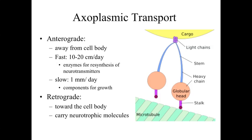This is the concept of axoplasmic transport. The microtubules within the cytoskeleton are organized like railroad tracks, running from the cell body — say, in the spinal cord at belly level — all the way down to the muscles of the toes. Protein motors crawl along these microtubules, either out towards the periphery in what is called anterograde transport, moving away from the cell body, or back towards the cell body in retrograde transport.